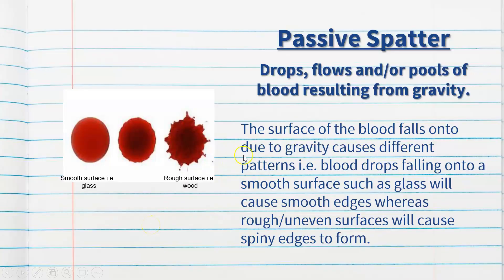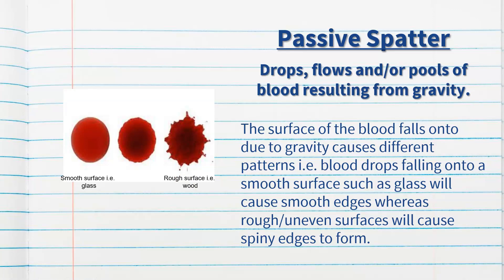Passive spatter is when drops, flows, or pools of blood result from gravity and gravity alone. The surface that the blood falls onto affects the pattern — blood drops falling onto a smooth surface such as glass will cause smooth edges, whereas rough, uneven surfaces will cause spiny edges to form. This can be very helpful to investigators in determining how long the person has been bleeding in that one spot and whether they collapsed or died at that particular location.